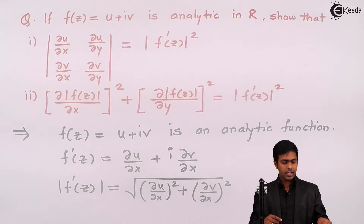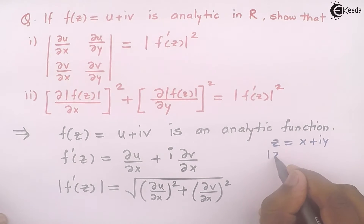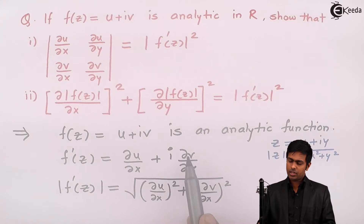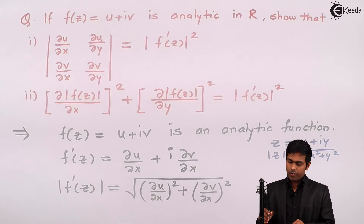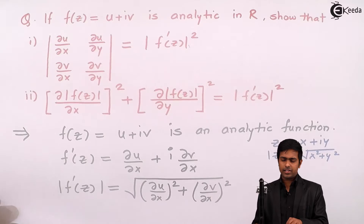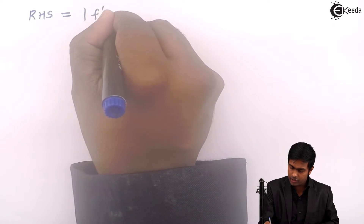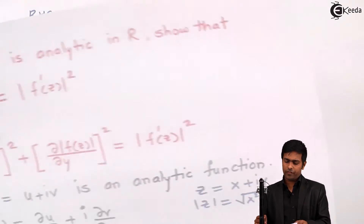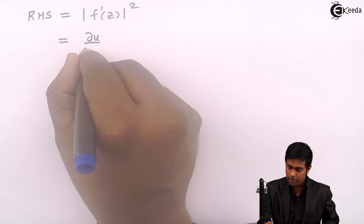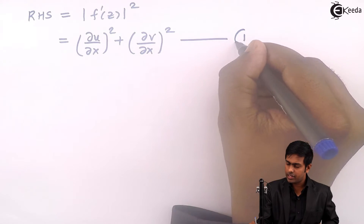Here I am using the concept of complex numbers. If z = x + iy, then |z| = √(x² + y²). So the real part is ∂u/∂x and the imaginary part is ∂v/∂x. We want the square of |f'(z)|, which is our RHS. So the RHS equals |f'(z)|², and squaring removes the square root, giving us (∂u/∂x)² + (∂v/∂x)². This is equation number 1.